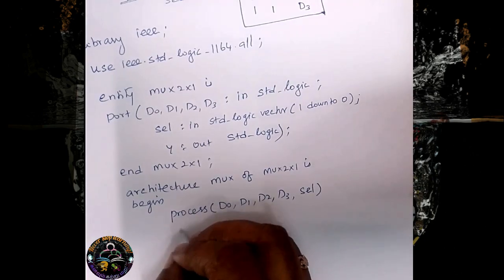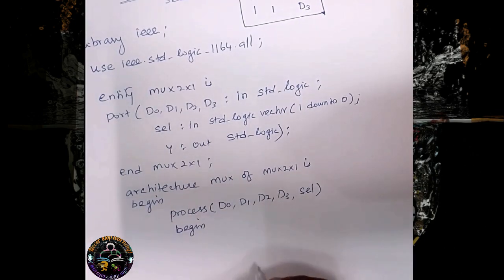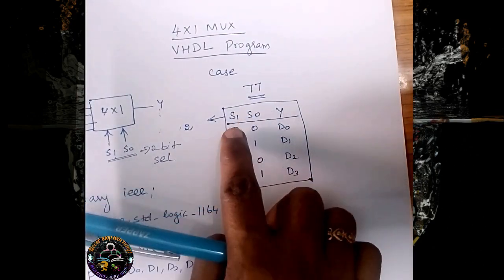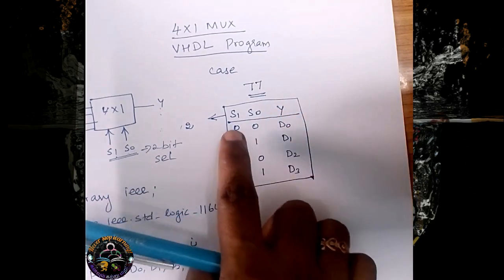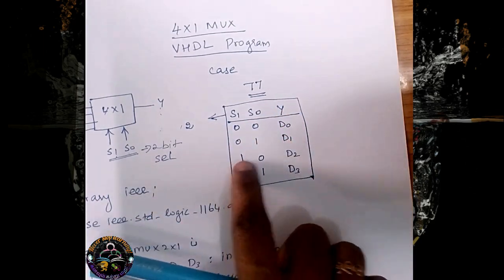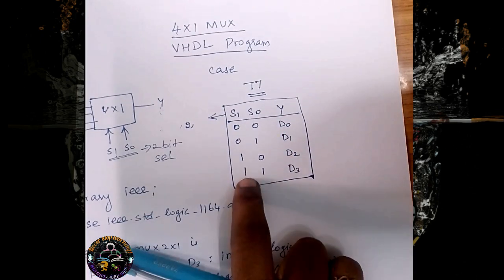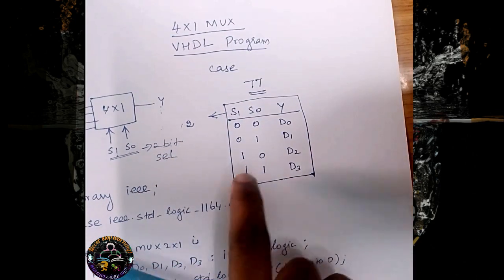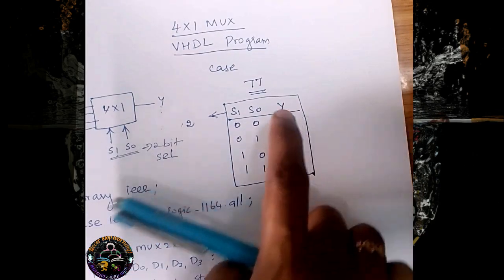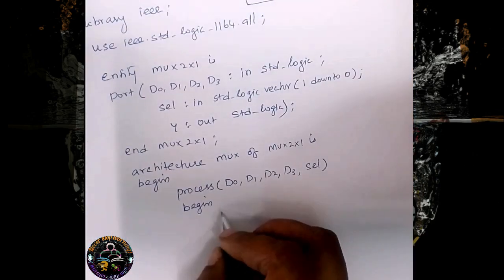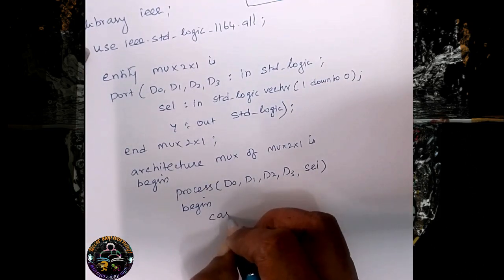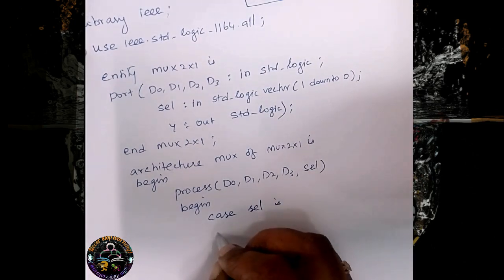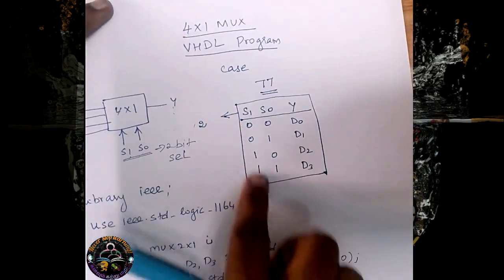Now we write 'begin' and we are going to check our selection line. If it is 00, output will be D0. If it is 01, output will be D1. If it is 10, output will be D2. If it is 11, output will be D3. So we write: case SEL, and then we list out all these conditions.